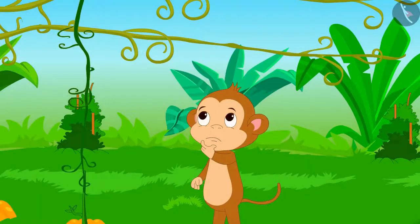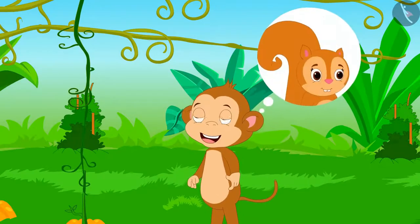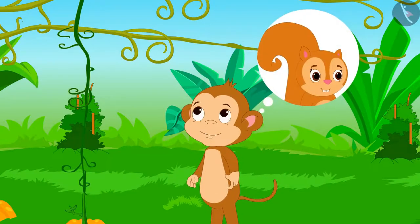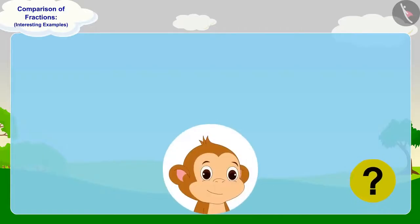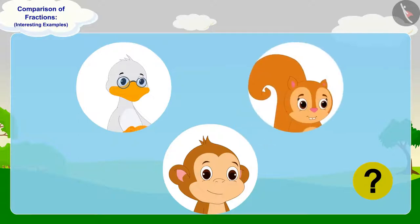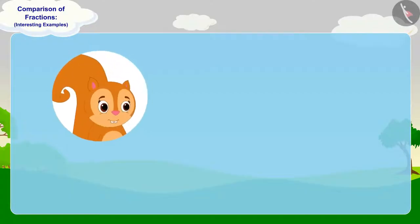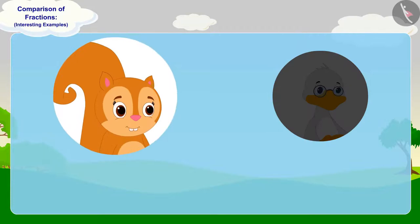Now Babban is thinking that he will give two-third part of 12 pumpkins to Chanda, as she is his best friend. Can you tell if Babban will give more pumpkins to uncle or Chanda? You can find the answer by stopping the video. Well done, children — you have found the perfect answer.